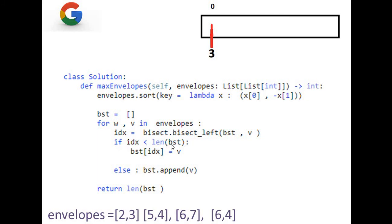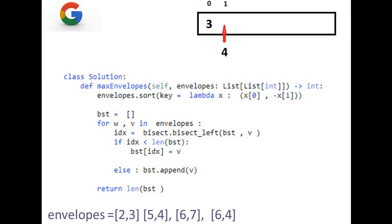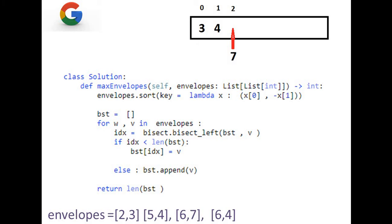Next, the second height in the sorted array is 4. bisect_left(BST, 4) returns index 1 since 4 is greater than 3. Index 1 is not less than len(BST) which is 1, so we append 4. BST is now [3, 4]. The next height is 7; it is greater than 4, so bisect_left returns index 2. Since 2 is not less than len(BST) which is 2, we append 7. BST is now [3, 4, 7].